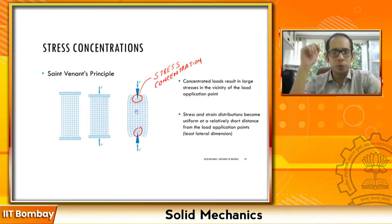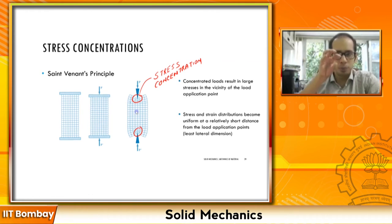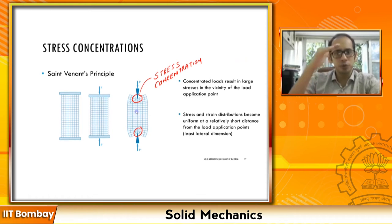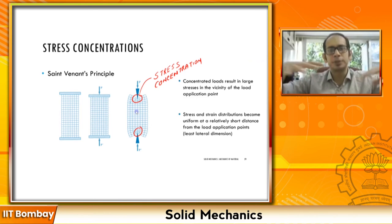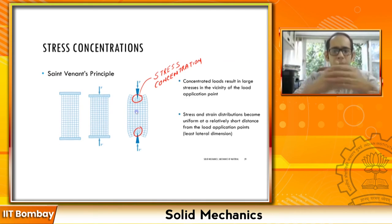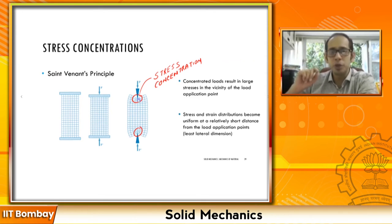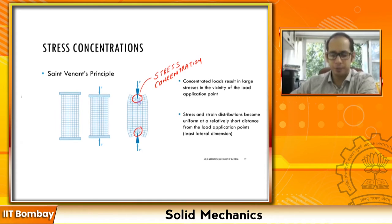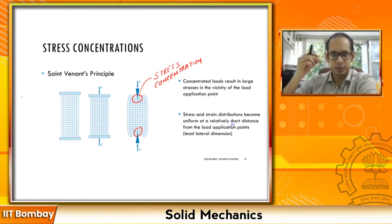At certain distances away — toward the middle — the stresses have had enough distance to percolate and become more uniform. Think of dropping ink into a bucket of water: at the surface where the ink touches, you have a large concentrated blob of blue color, but as you move toward the bottom the color disperses and becomes uniform. Similarly, sigma = P/A is valid at certain distances from the point of load application.